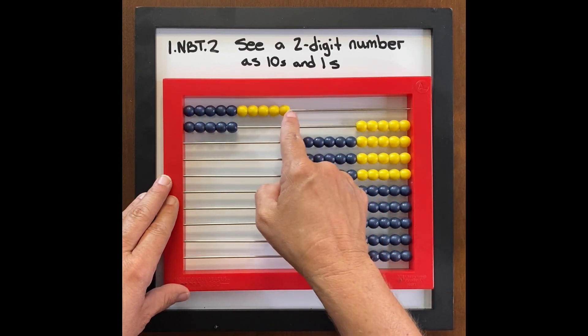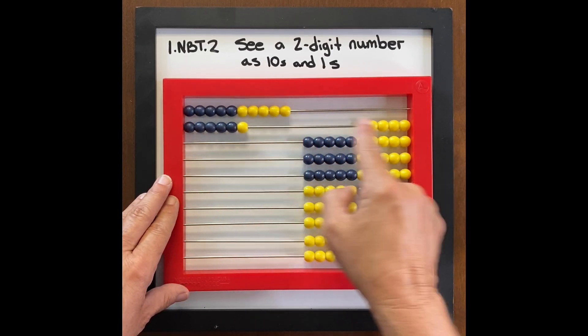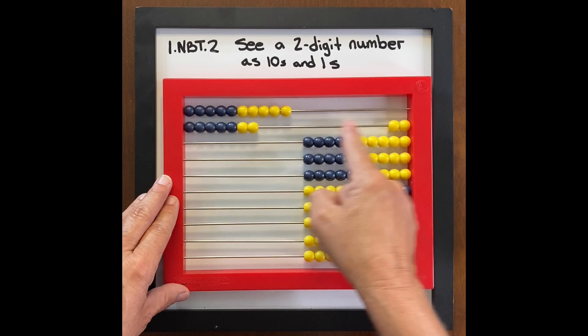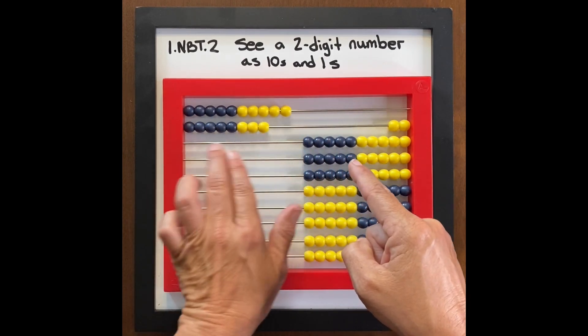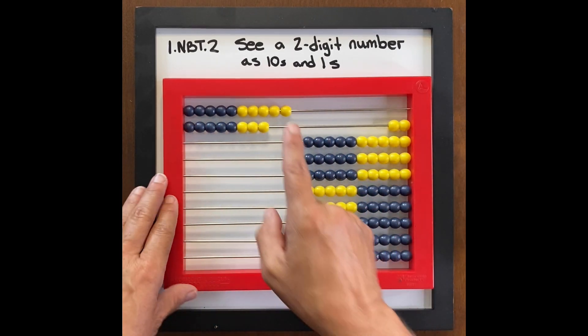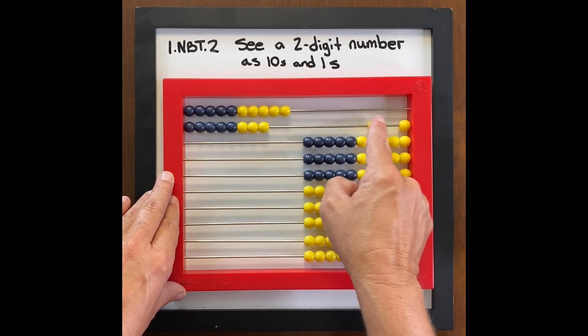So I'm constantly saying one ten six, one ten seven, one ten eight. And this section, which is our teen numbers, gets a little tricky. This really helps them. One ten nine.